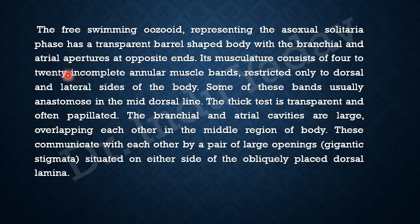These are incomplete annular muscle bands. The muscle bands seen dorsally are anastomosing on the mid-dorsal region, meaning they are mixing with each other on this mid-dorsal line. These annular muscle bands are restricted only to the dorsal and lateral sides of the body; they are not present on the ventral side of the body.